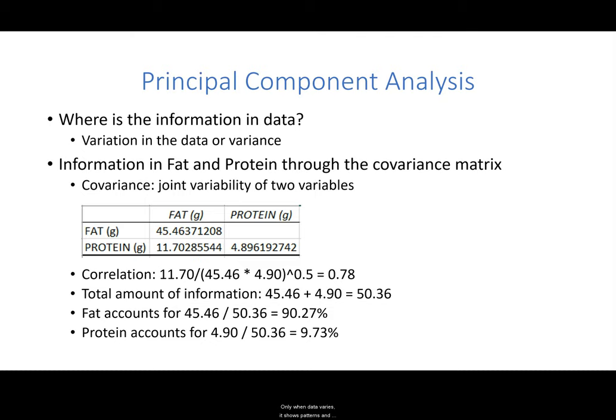Only when data varies, it shows patterns and relationships. We can measure the amount of information in a variable using the measurement variance, which is computed as the sum of the squared difference between the value and the mean, divided by the number of values.